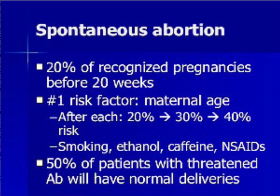Spontaneous abortion or miscarriage occurs in 20% of all recognized pregnancies before 20 weeks, and is probably far more common as there are a significant number of unrecognized pregnancies that end in miscarriage. The number one risk factor is maternal age. History of miscarriage is a strong risk factor for future miscarriage. Smoking, ethanol, caffeine, and NSAID use have all been associated with a higher rate. It is important to note that patients with first trimester bleeding where ectopic is ruled out and physical examination is normal have as good a chance of normal delivery as they do of miscarrying. Therefore, always reserve judgment when discussing prognosis with patients.